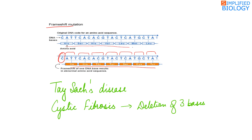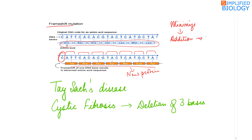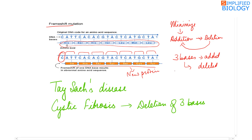In frameshift mutation, the amino acid sequence becomes completely different from the original sequence, forming a completely new protein, which means the function of the original protein is lost. However, the effect can be minimized if an addition is immediately followed by a deletion, or vice versa, or if three bases are added or deleted together. In all these cases, only a single amino acid change occurs. Examples of frameshift mutation include Tay-Sachs disease and cystic fibrosis, the latter caused by deletion of three bases.